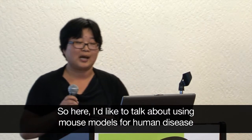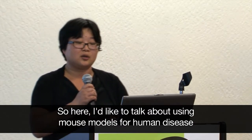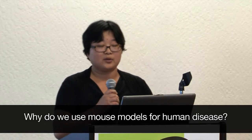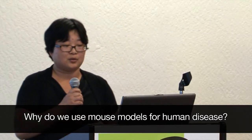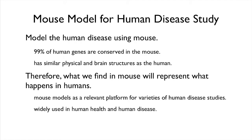Here I would like to talk about using mouse models for human disease. Why do we use mouse to model the human disease? First, 99% of the human genes are conserved in the mouse. And the mouse has similar physical, especially brain structures, as a human.